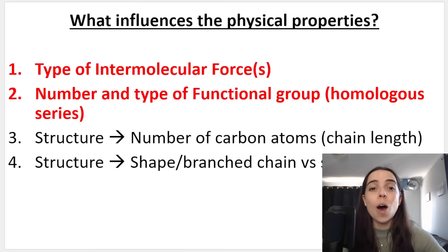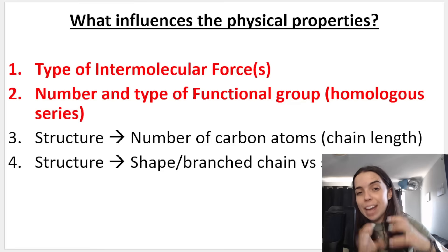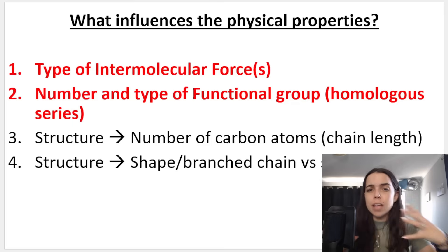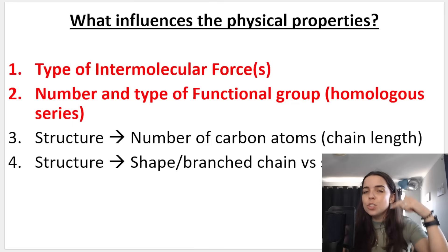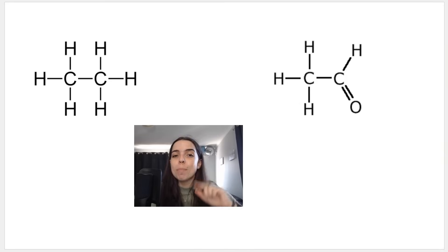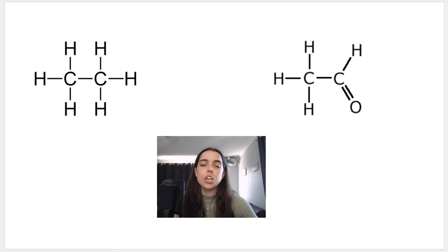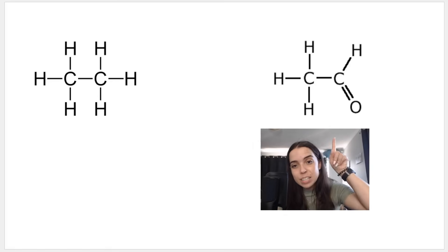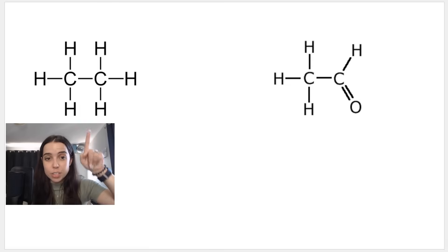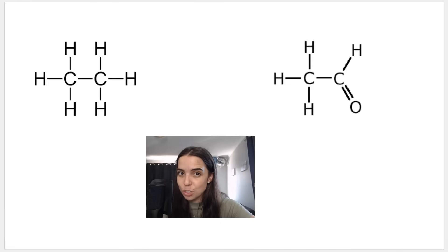In this lesson, we'll be looking at how the type of intermolecular forces that an organic compound has, and the number and type of functional groups — how that influences the physical properties. If I asked you to compare these two compounds and tell me which one had a higher boiling point and explain why, you would be able to say their boiling points differ, and this one would have a higher boiling point than the other, simply because they have different functional groups.